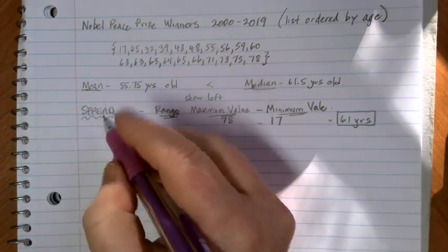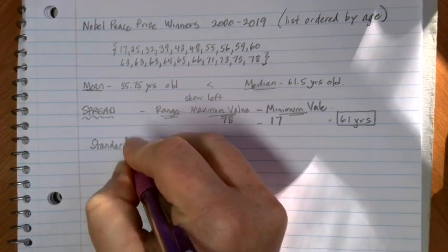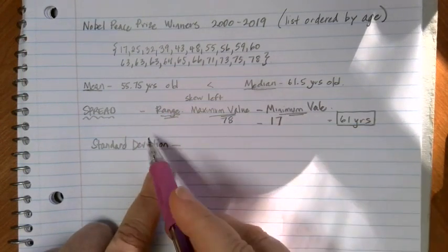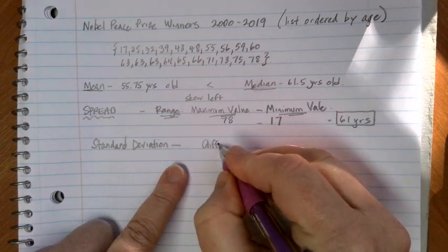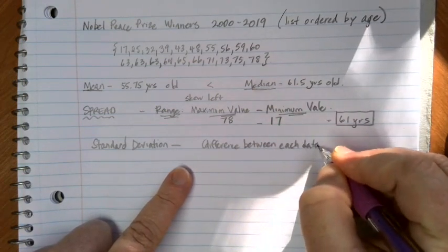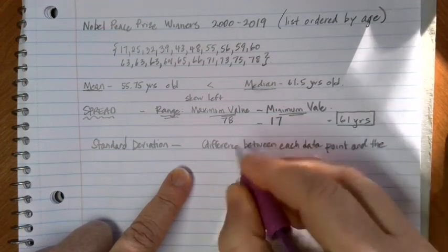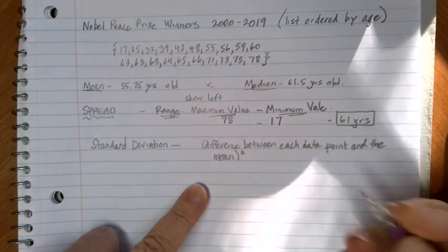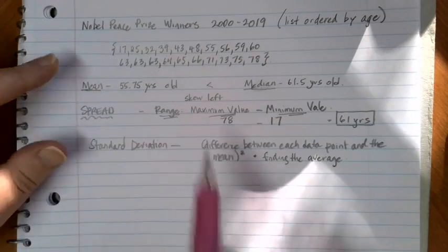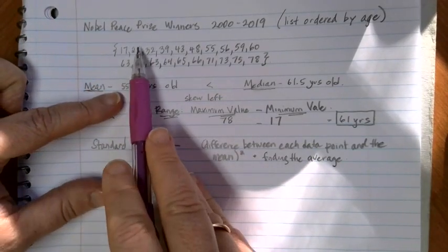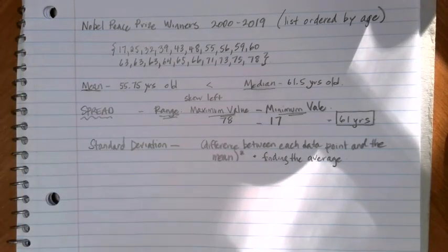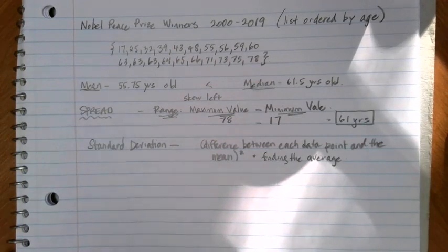One type of spread that we talk about is called the standard deviation. The standard deviation is related to the mean, and it's gotten by finding the difference between each data point and the mean and then squaring them and finding the average of those more or less. That's the basic mathematical principle behind that. So you would take 17 minus 55.75 and square it, 25 minus 55.75 and square it, 32 minus 55.75 and square it, add all of those and find the average basically based on that. And that's going to give us our standard deviation.